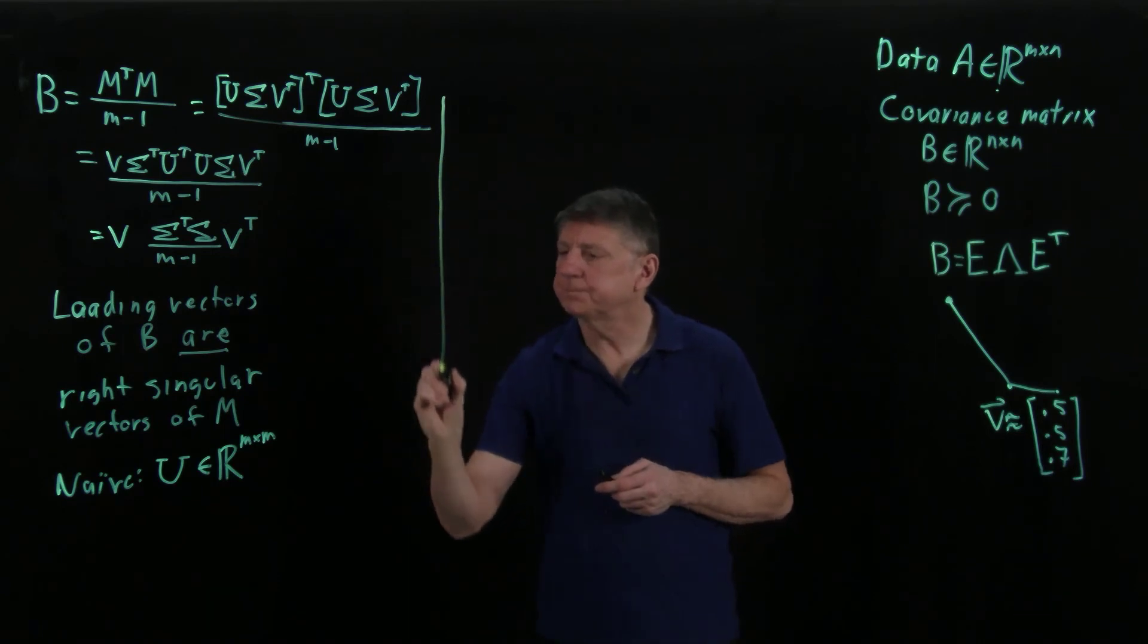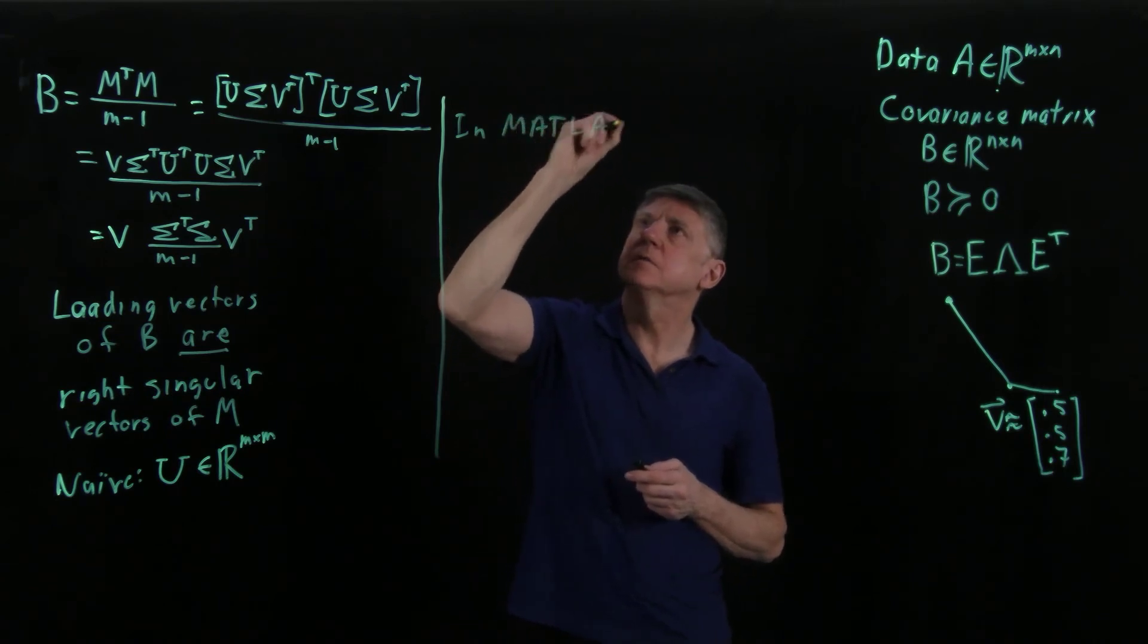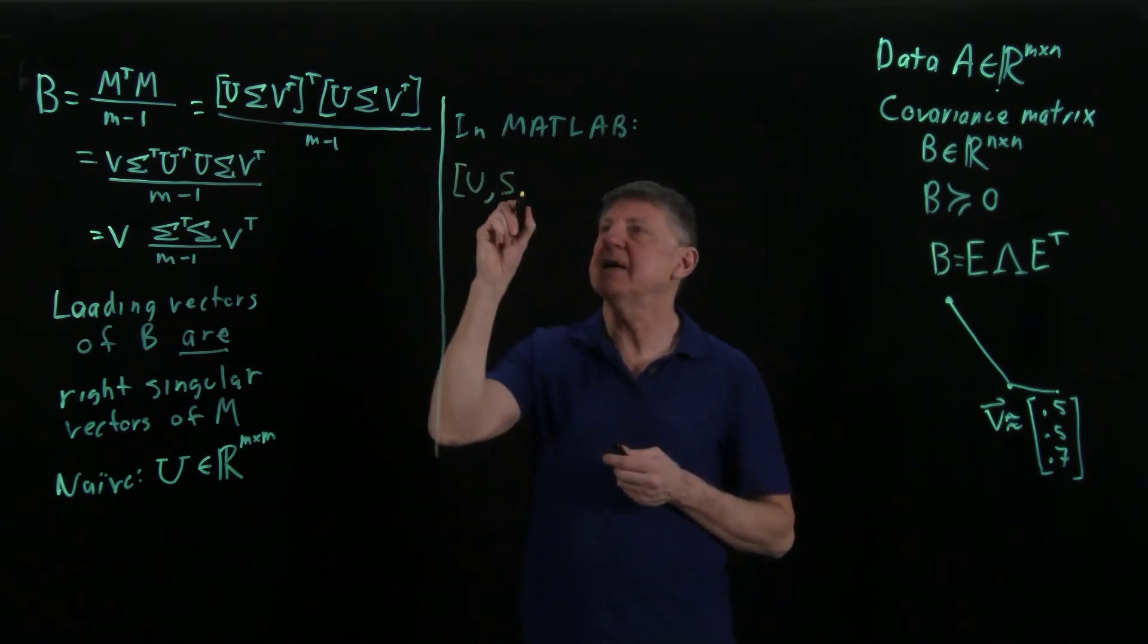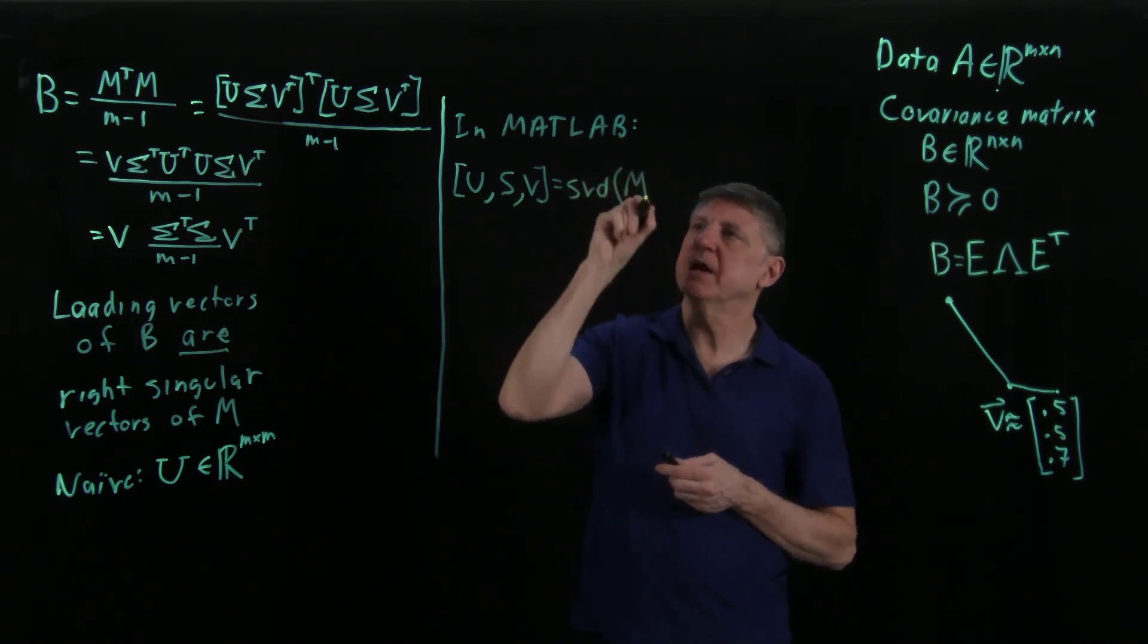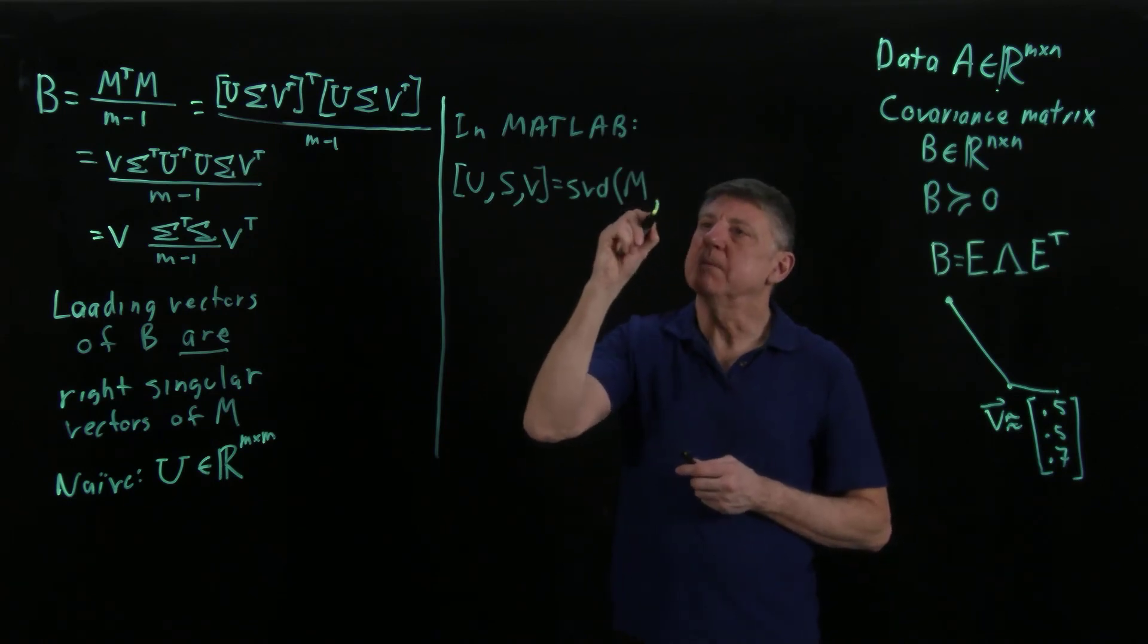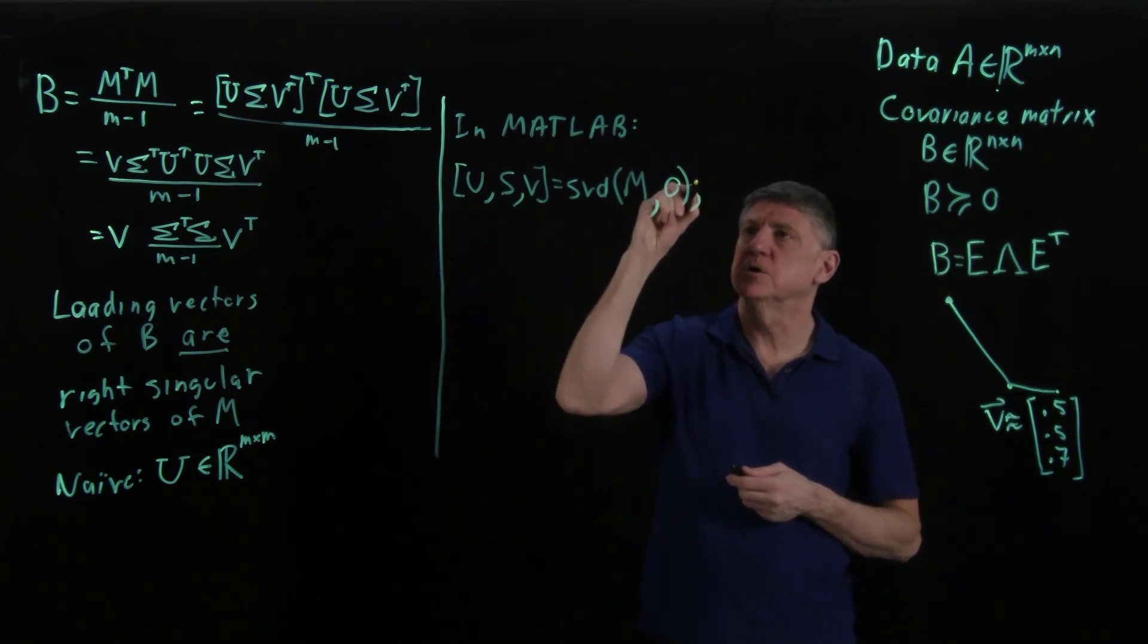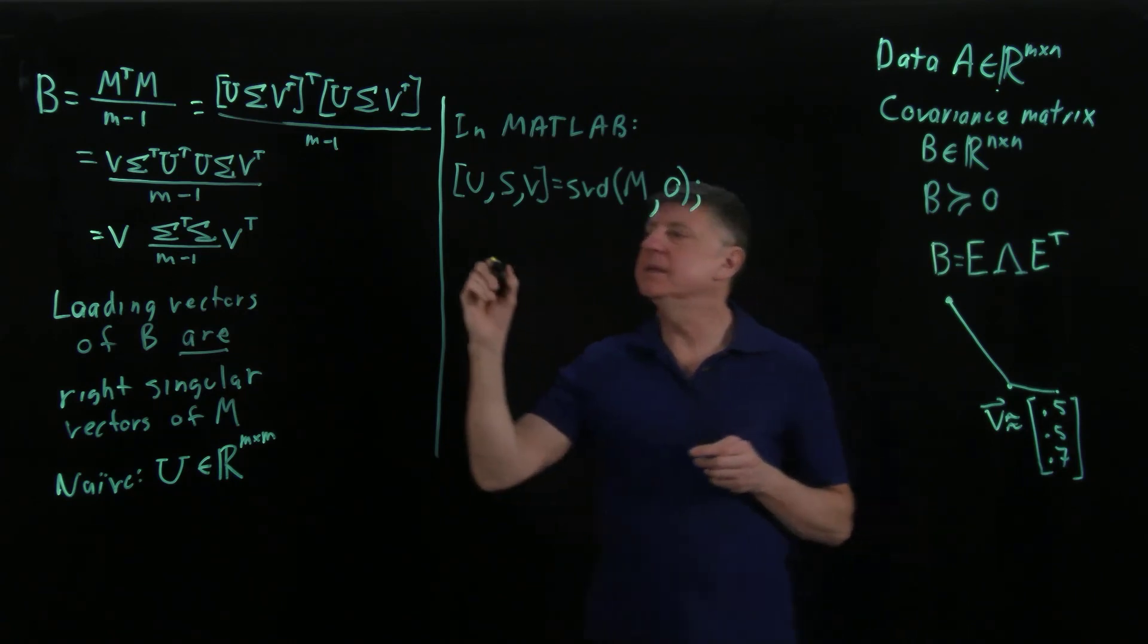So in MATLAB, what we can do is this. We can say something like U, and MATLAB doesn't have sigma, so I'll use S, V equals, we would do the SVD of, let's suppose that we have our zero mean data in the variable capital M. And then in MATLAB, what we do is put comma zero. And if you're interested in the results of this, you would leave off the semicolon. I'll suppose that for large data, we don't really need these displayed on the console, and so we would put a semicolon on.